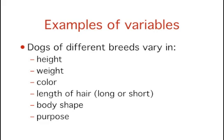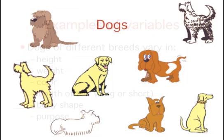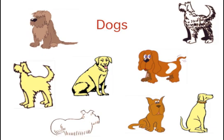These three dogs vary in height, weight, color, length of hair, body shape, purpose for which they were bred, and so forth. Here are some dogs that vary on many dimensions. They vary on breed, height, weight, color, among other things.